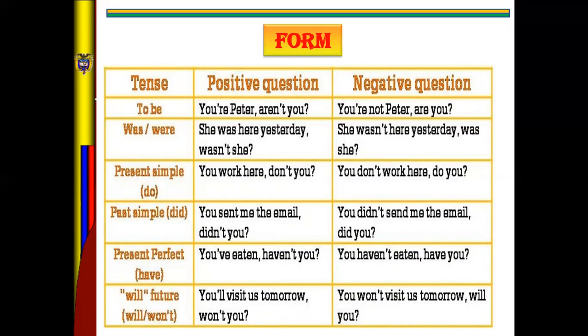In affirmative, what is the question tag? For example, with 'to be' you say 'You are Peter, aren't you?' In negative: 'You are not Peter, are you?' In simple past affirmative: 'Did you send me the email, didn't you?' In simple past negative: 'You didn't send me the email, did you?' Please look carefully at this chart.